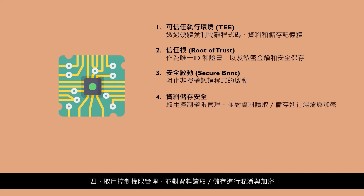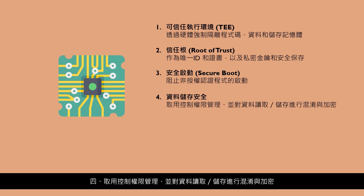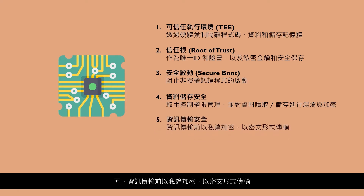4. Data at rest security: allows stored data to be encrypted or obfuscated with solid access control. 5. Data in transit security: before transmission, data should be encrypted by keys and sent in the form of ciphertext.